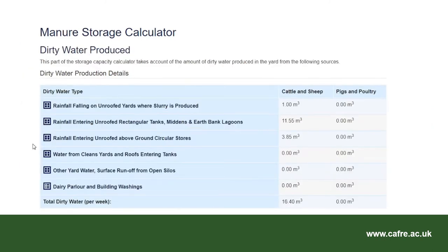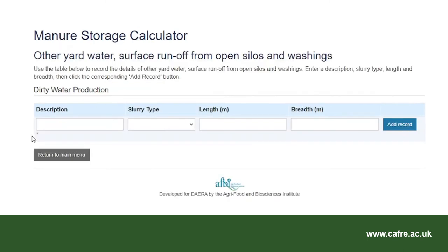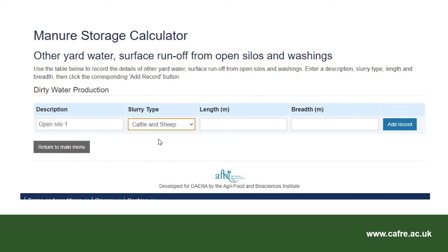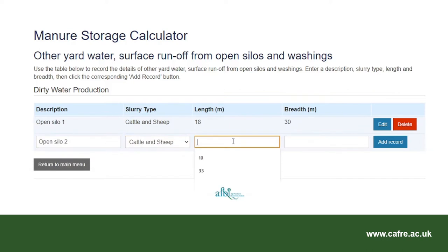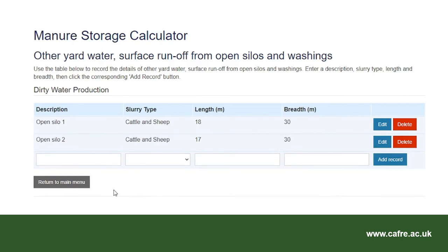Assuming that water from roofs is collected using spouting and sealed downpipes, and water from clean yards is diverted to storm drains and does not enter the slurry tanks, I do not need to select water from clean yards and roofs entering tanks for this example. I will now select other yard water — surface runoff from open silos. I will enter the description 'open silo 1', select cattle and sheep as the slurry type, enter the length of 18 metres and breadth of 30 metres, remembering to select the add record button to save the entry. Assuming that both silos are open for the winter period, the water that runs off the open silo needs to be collected. Select return to main menu.